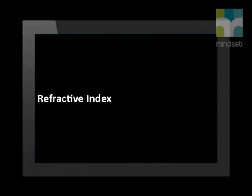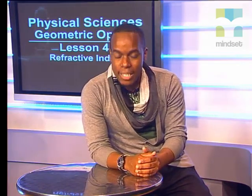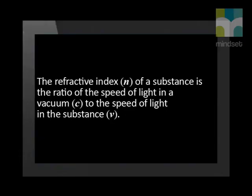The refractive index is a measure of how much a substance refracts light. The refractive index of a substance is the ratio of the speed of light in a vacuum to the speed of light in a substance. Let's write that down to help us understand it better. The refractive index, n, of a substance is the ratio of the speed of light in a vacuum, c, to the speed of light in the substance, v.